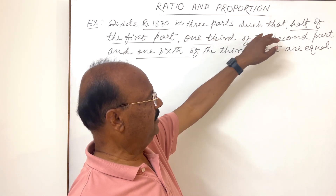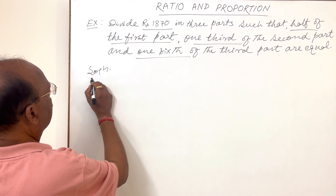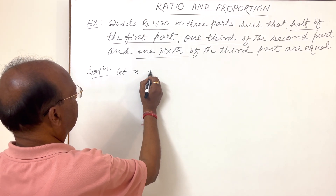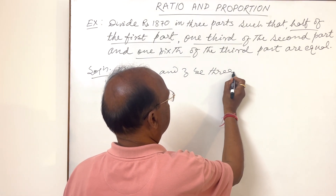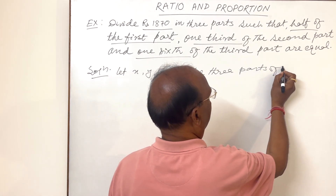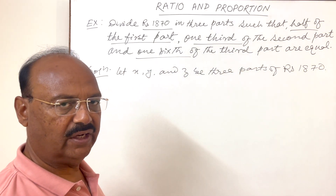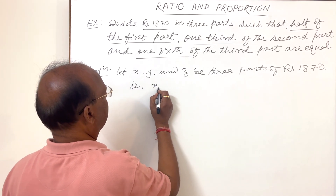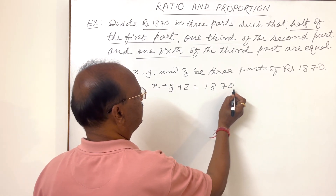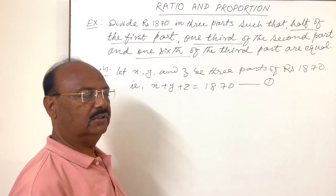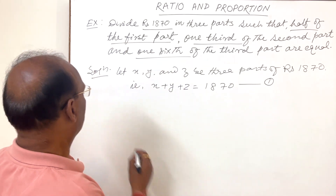Let us see the solution. Let x, y, and z be the three parts of rupees 1870. This means x plus y plus z is equal to 1870. Let us call this relation number one. Now let us apply the given condition.